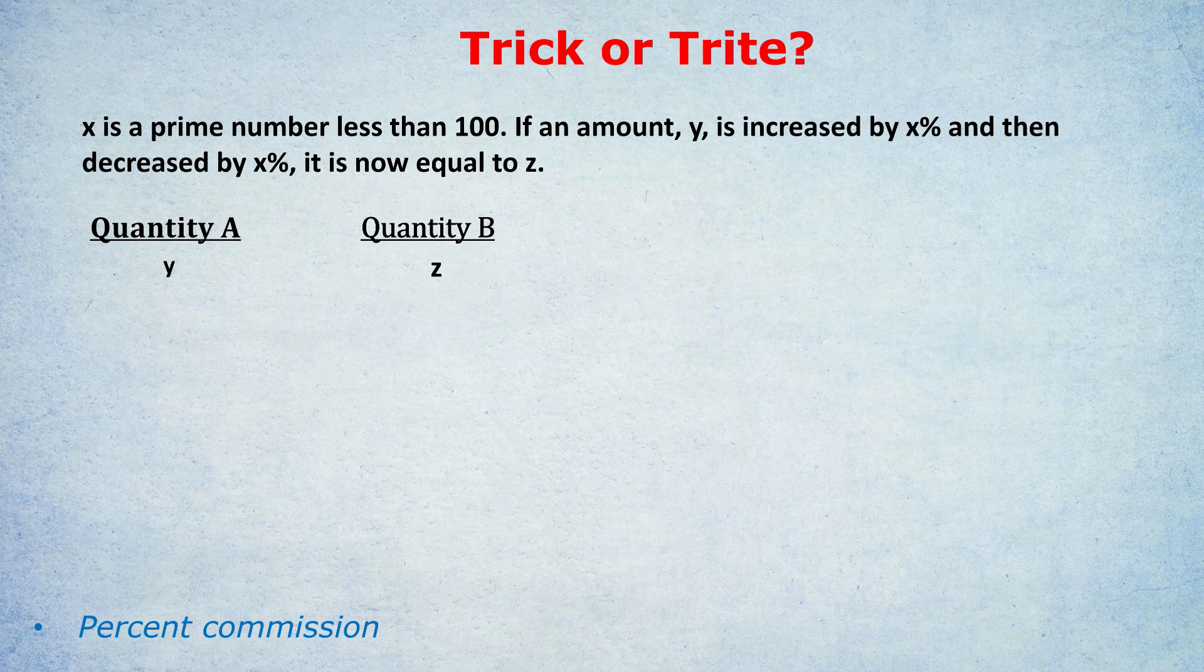If you try increasing something by, say, 20%, and then decreasing it by 20%, then you don't get back to your original amount. So many people would pick C, thinking that y just came back to being itself again. And so y must equal z.